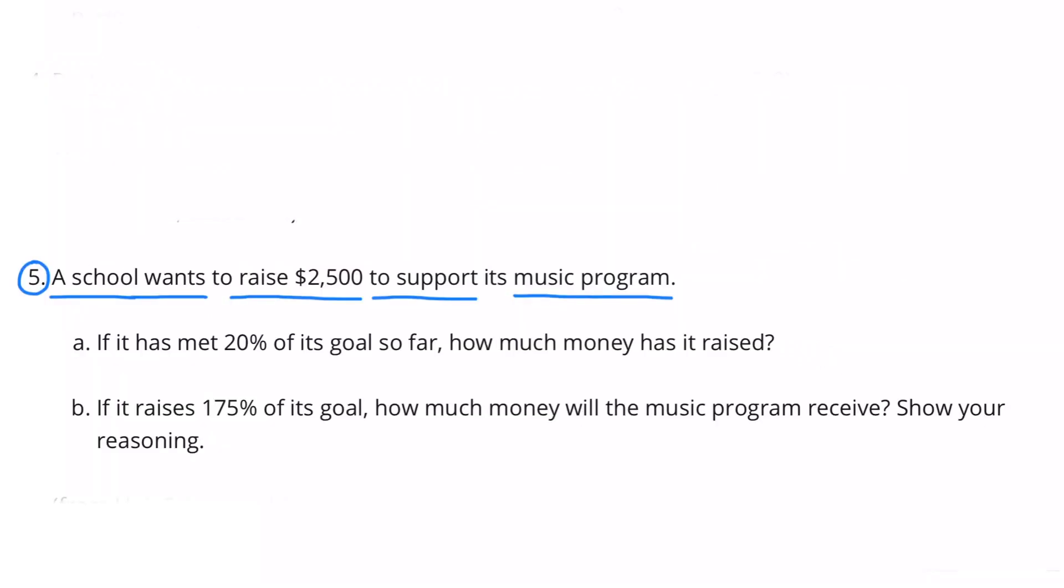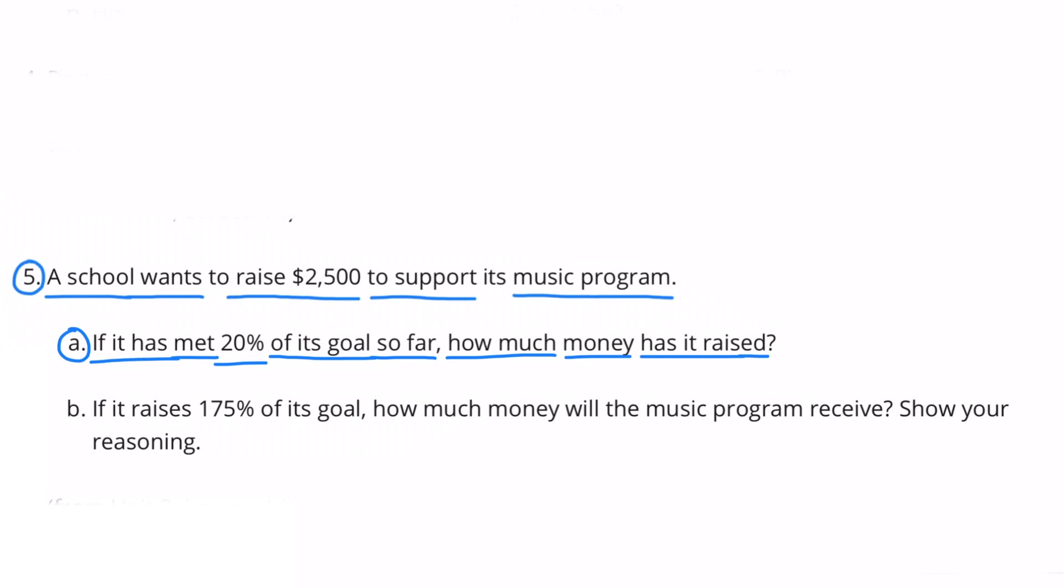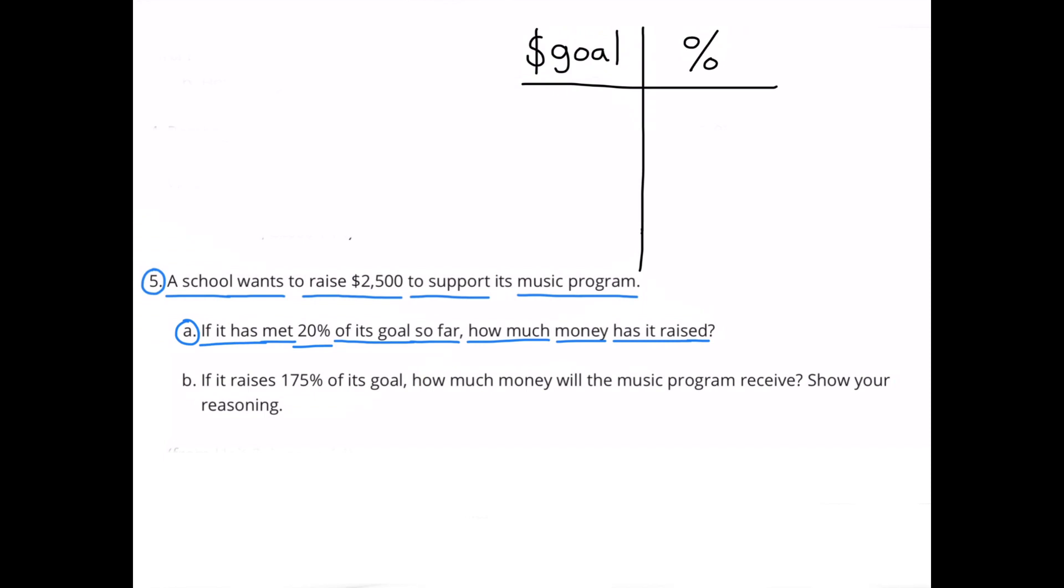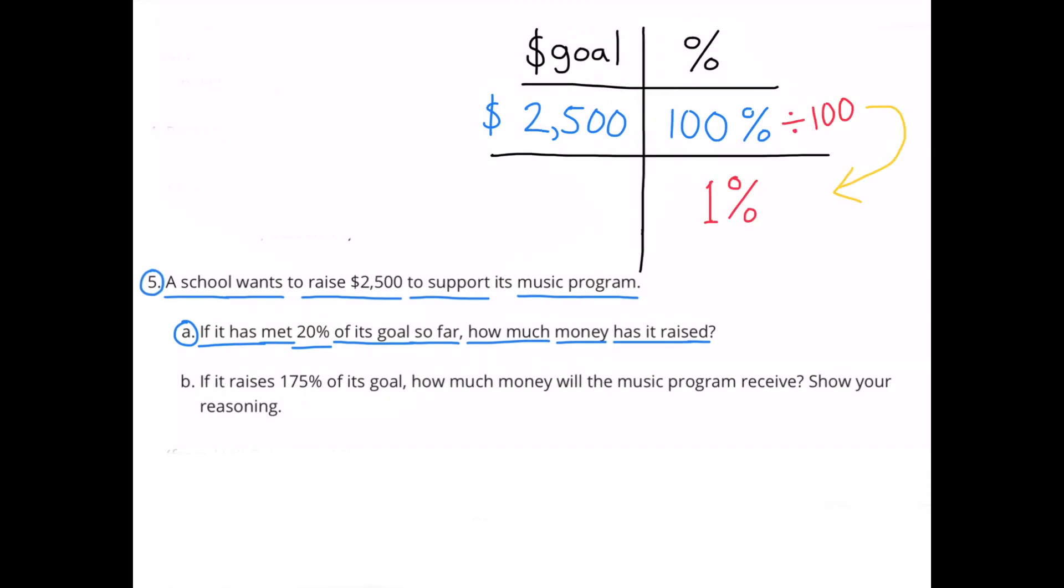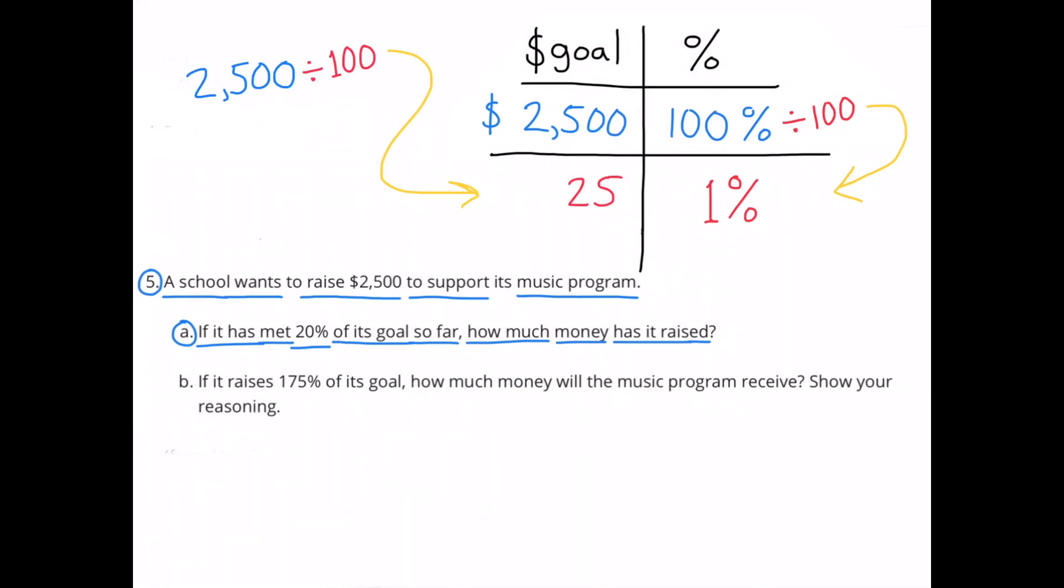Number 5. A school wants to raise $2,500 to support its music program. A. If it has met 20% of its goal so far, how much money has it raised? I decided to build a table with the dollar goal on the left and the percent of the goal on the right. $2,500 is 100% of the goal. I'd like to divide 100% by 100 to figure out what 1% of the goal would be. 100% divided by 100 equals 1%. And since I divided the right column by 100, I have to divide the left hand column by 100. $2,500 divided by 100 equals 25. So 1% of the goal would be $25.